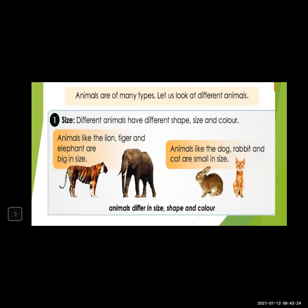In the last lecture we learned about types of animals. Animals are of many types. Let us look at different animals. First type is about size. Some animals are small, some animals are big. Different animals have a different size, different shape, and color. Animals like lion, tiger, and elephant are big in size. But dog, rabbit, and cat are very small in size. Depending upon the size, animals have a different shape, size, and color.